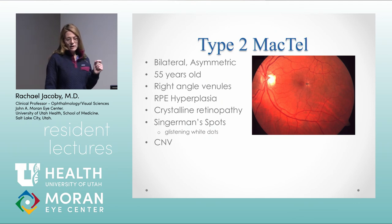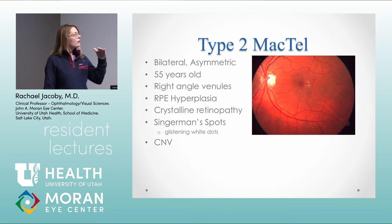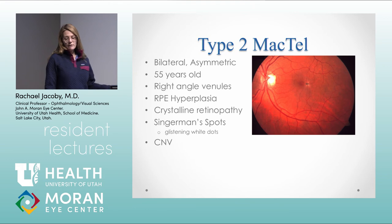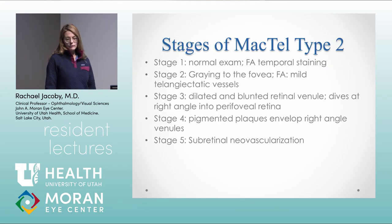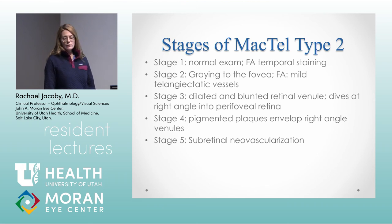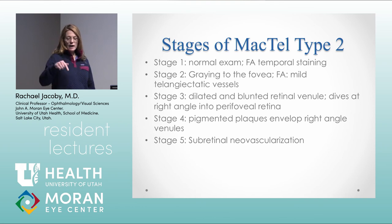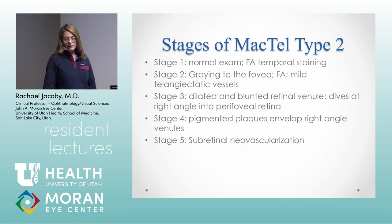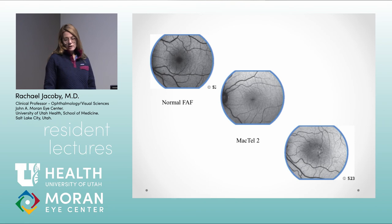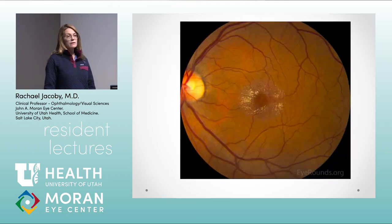Type 2 mactel is often bilateral with a genetic component. You see RPE hyperplasia with right angle venules, crystalline deposits in the macula, and Singerman spots — glistening white dots visible in the retina. Advanced stages can develop choroidal neovascular membranes. The staging: Stage 1 shows a normal exam but fluorescein changes with temporal staining; Stage 2 shows graying of the fovea and telangiectatic vessels on fluorescein; Stage 3 shows a dilated blunted venule diving at a right angle into the retina; Stage 4 is pigmentary plaques around those venules; Stage 5 is neovascular disease.